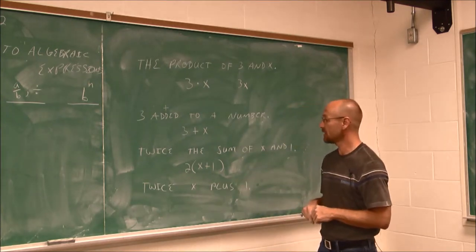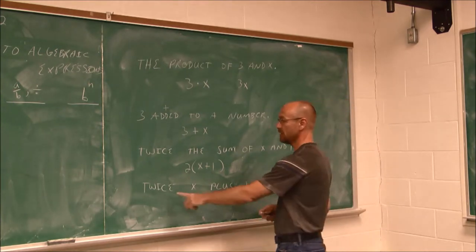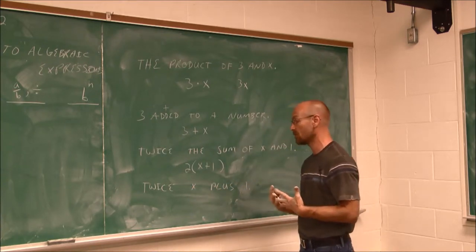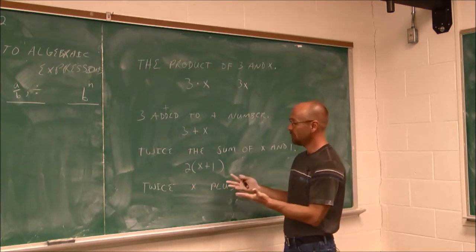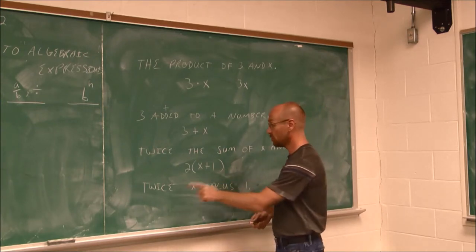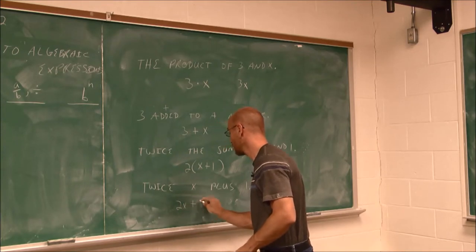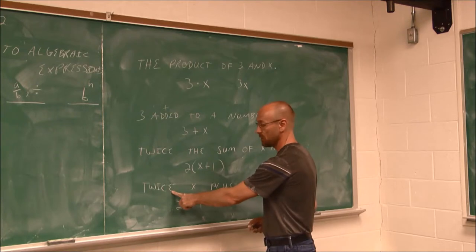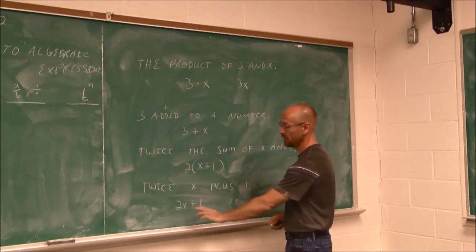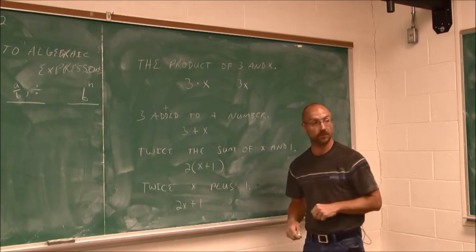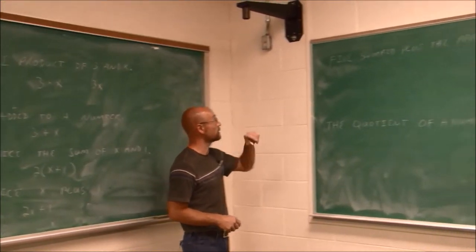Let's look at this one and see how is this different. This says twice x plus 1. If we think about this in terms of order of operations, we would essentially multiply before we add. Twice x plus 1. So we identified this means addition. This means multiplying by 2. 2x plus 1. Twice x plus 1. And that's what that says. Let's look at some more examples.